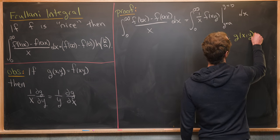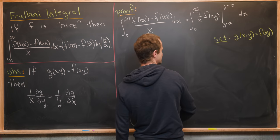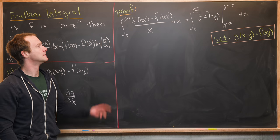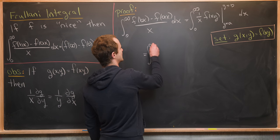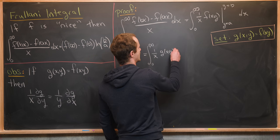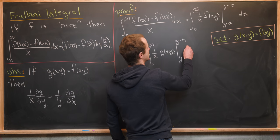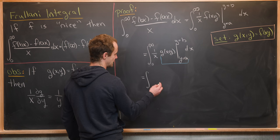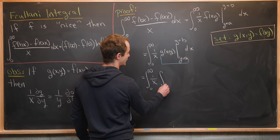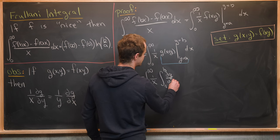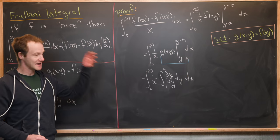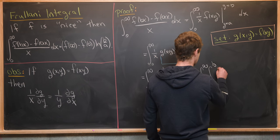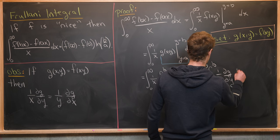We set g(x, y) equal to f(x times y), shifting our perspective to think of this as a function of two variables. So we write the integral from zero to infinity of (1/x) times g(xy) evaluated from y = a to b, dx. Applying the fundamental theorem of calculus to the inner evaluation, this becomes the integral from zero to infinity of (1/x) times the integral from a to b of ∂g/∂y dy, dx. We rewrite this as a double integral.